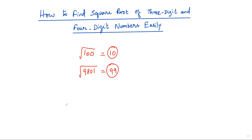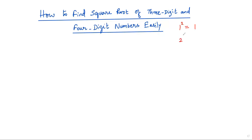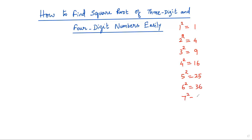Now let us find the squares of all nine digits from 1 to 9: 1²=1, 2²=4, 3²=9, 4²=16, 5²=25, 6²=36, 7²=49, 8²=64, and 9²=81.